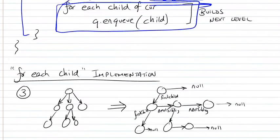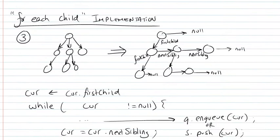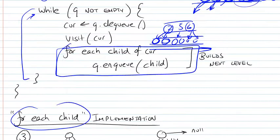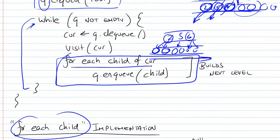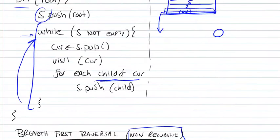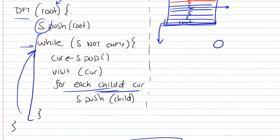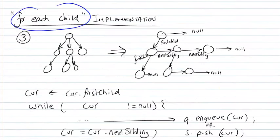Now finally, now that we've seen implementations of DFT and BFT, let's look at what exactly we mean by 'for each child.' When we talk about for each child here, or even in previous implementations, what exactly does that mean in code?